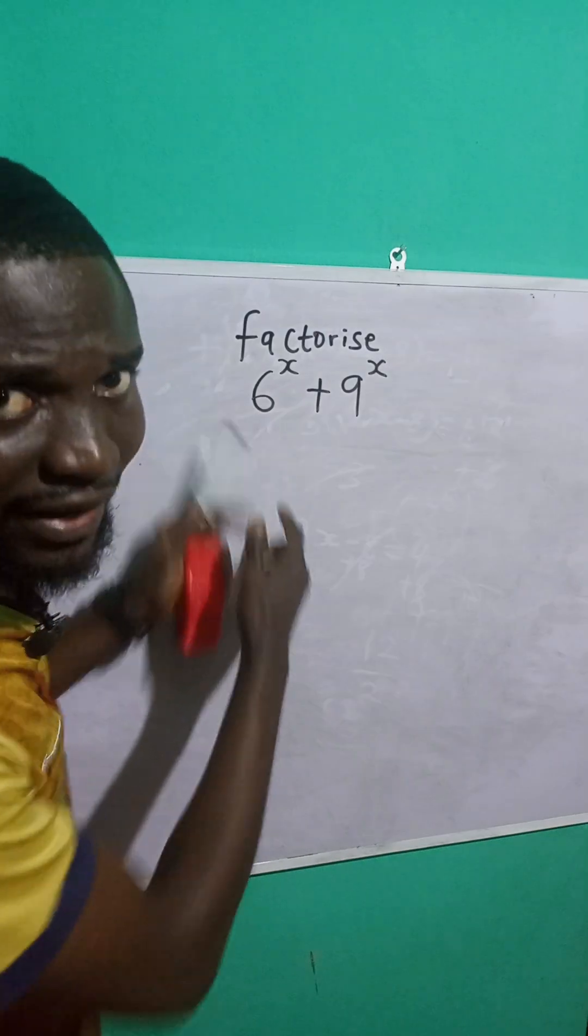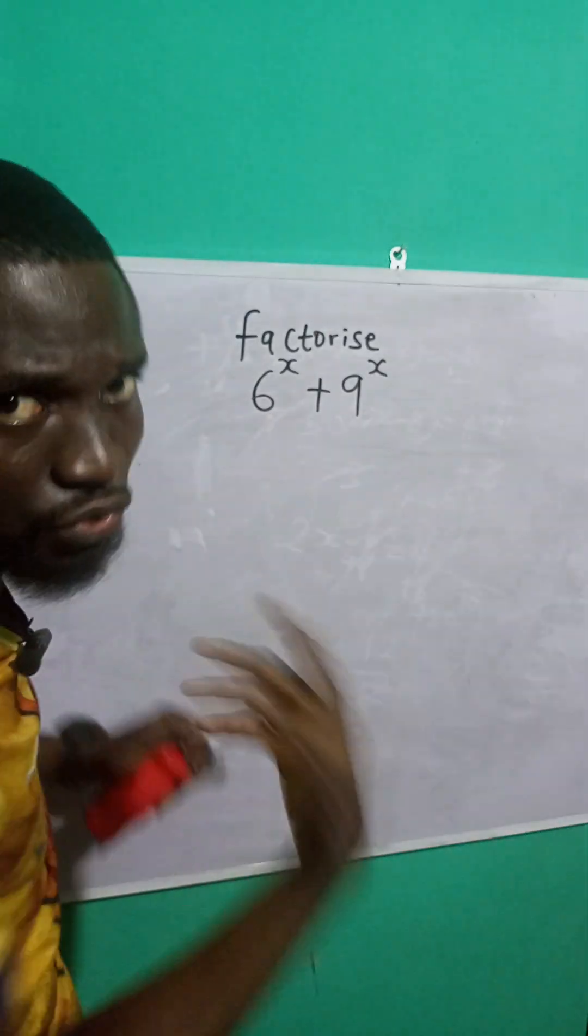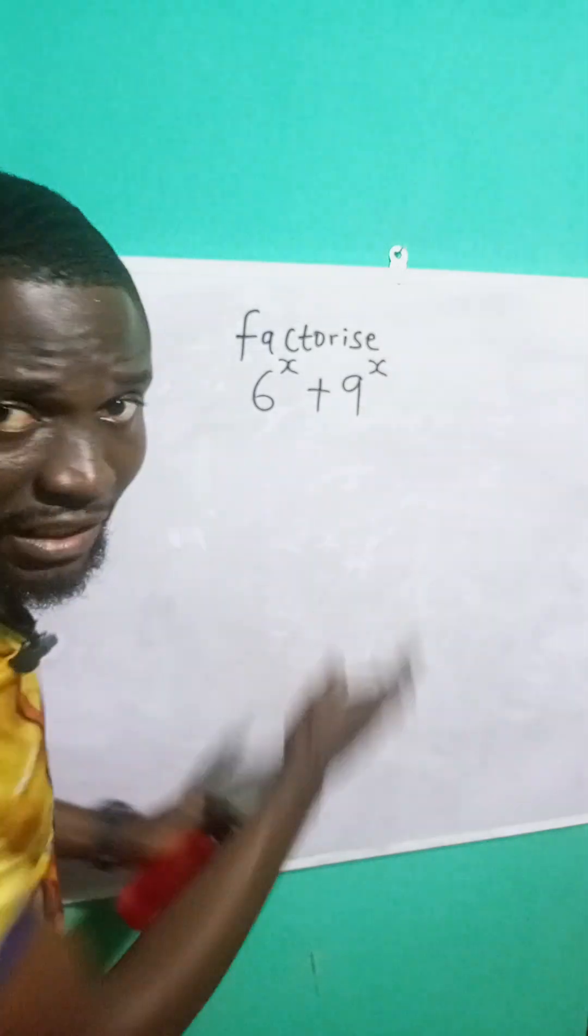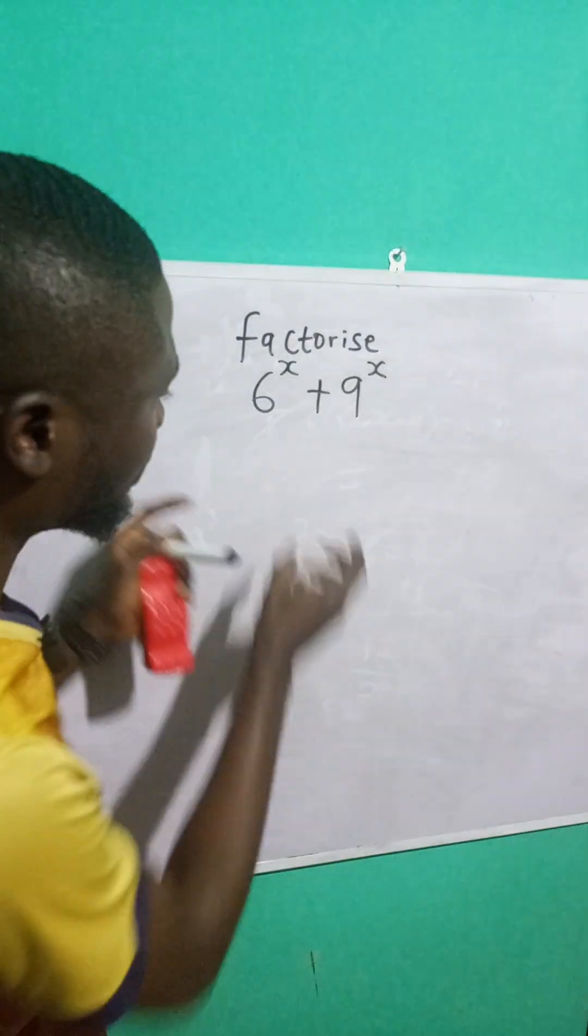Now, do you know that 6 raised to the power of x, 6 can be written as 2 times 3 and 9 can be written as 3 times 3. Why did I do that? I'm trying to look for a common factor between these two terms.